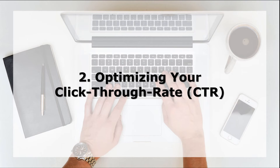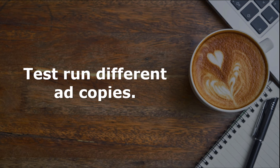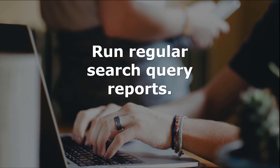Two, optimizing your click-through rate or CTR. Your CTR directly affects the performance of your quality score, which is the relevance of your campaign. This will then determine how much you pay per click. To optimize your CTR, test run different ad copies to see which version gets the most clicks. This can be done by running a new ad alongside the old one for a week or so and keep the winning ad. You can also run regular search query reports to detect irrelevant search queries that could be causing a high amount of impressions and unwanted clicks. These kinds of search queries can be added to the list of negative keywords to improve CTR.